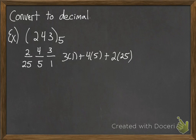We can just multiply that out and add it up. And when we do, we find out that this is the decimal 73. It corresponds to the number 243 in base 5.